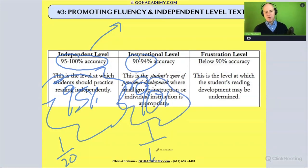that means they're missing one out of every 10 words. Instructional level is really the level we look for for small reading groups with a teacher, where the teacher is trying to address specific skills.